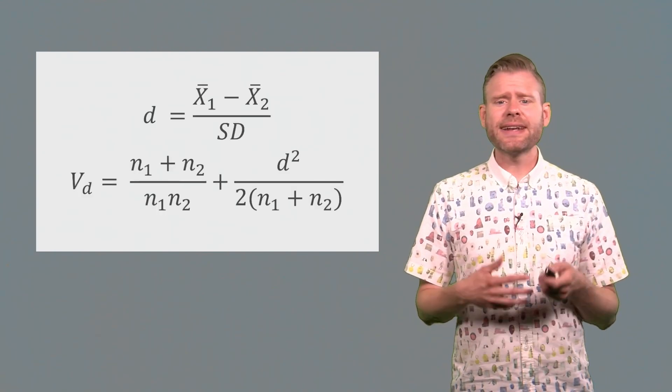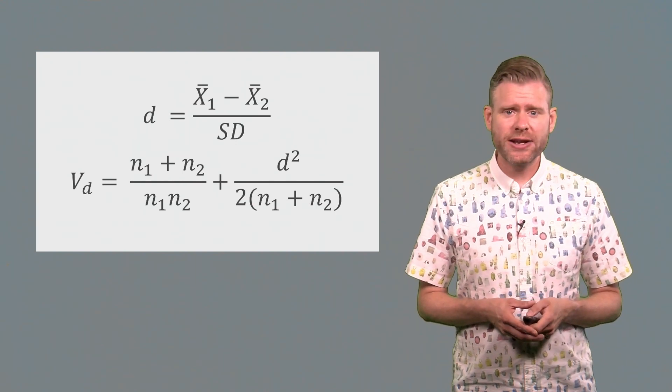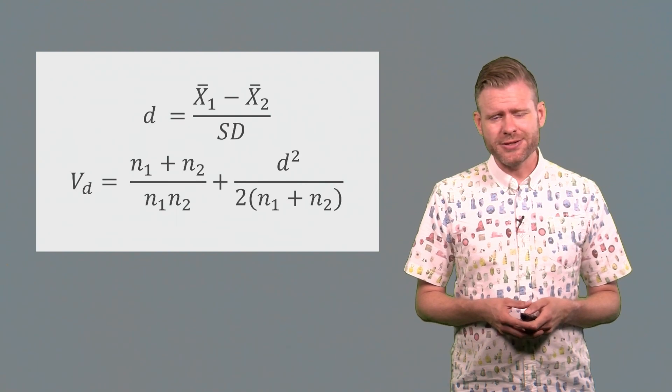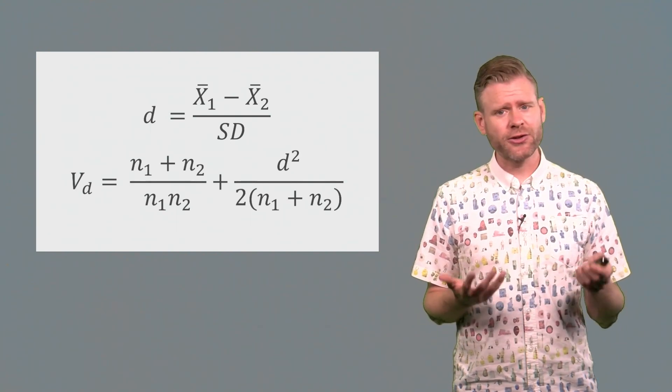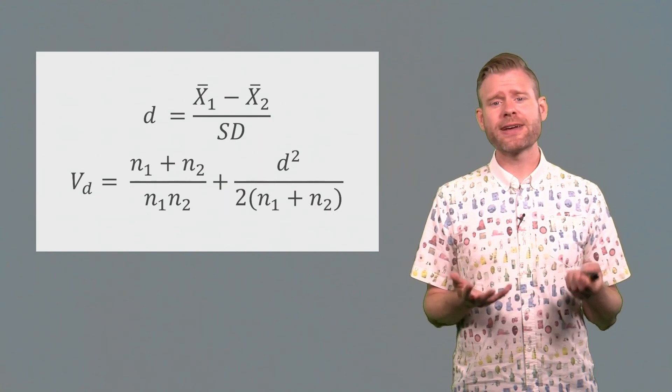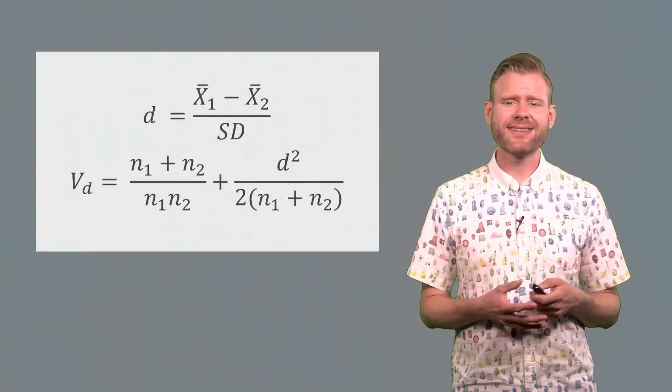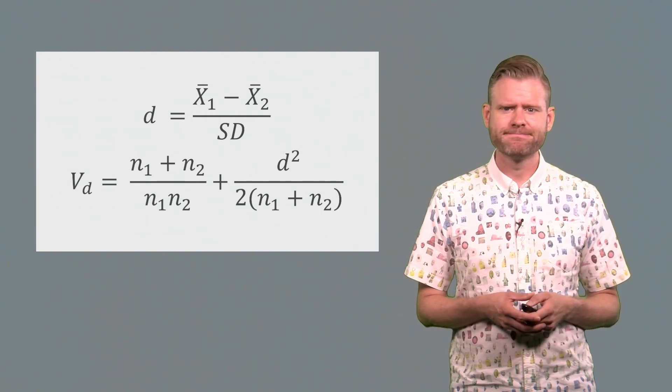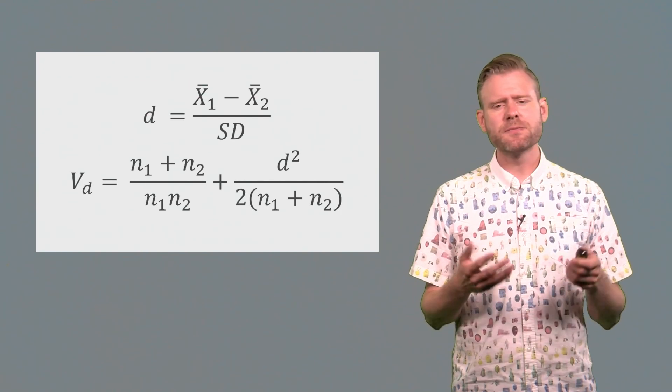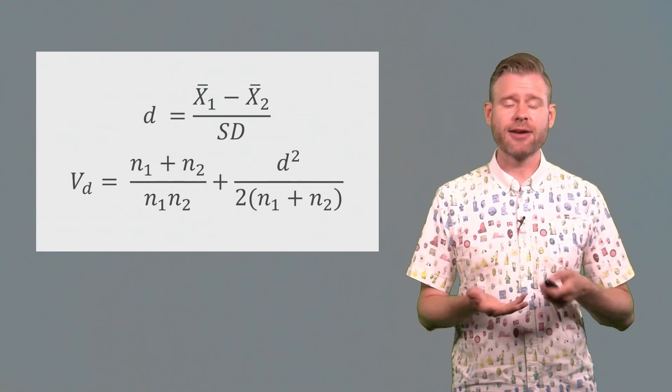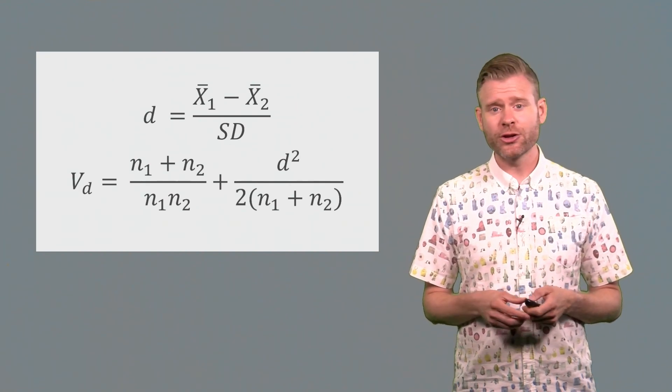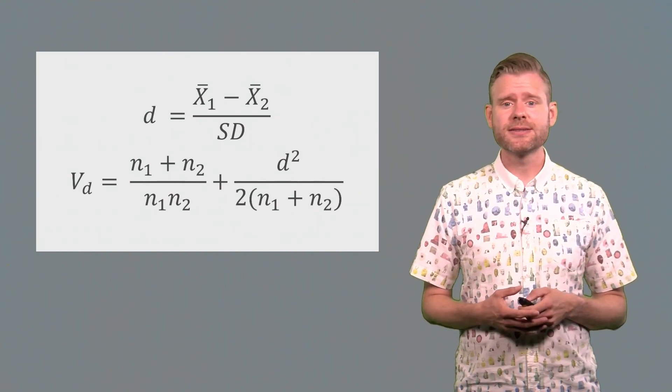Calculating the effect size and its variance is actually relatively straightforward if enough data is presented in the original articles, which is regrettably not always the case. For this reason, making raw data available is very recommended because it will make future meta-analyses much easier. If all the data that you need to calculate the effect size is available, such as means and standard deviations, and for within designs correlations between dependent variables, you can quite easily calculate the effect size and the variance.